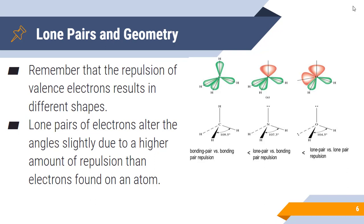Looking at the examples: a tetrahedral geometry has four atoms attached and no lone pairs, giving a bond angle of 109.5 degrees. With one lone pair on nitrogen, those electrons push the atoms downward more than in the tetrahedral case, giving a bond angle of 107.3 degrees. With two lone pairs, like on H2O, the bond angle is even smaller at 104.5 degrees. Lone pairs have more repulsion because they are a pure negative charge, whereas electrons on atoms are balanced by associated positive charges.